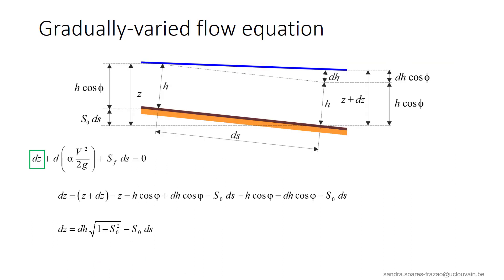Let us first consider the first term dz. The water depths are projected onto the vertical, and cos phi is replaced by the square root of 1 minus S0 squared. So we finally, after some manipulation, obtain this expression of dz as a function of dh and ds.